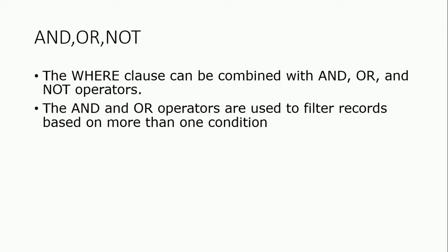With the WHERE clause we can filter and display data. We have fulfilled conditions using the WHERE clause. If we have two conditions, we can use AND — for example, where city is Islamabad and class is BS.